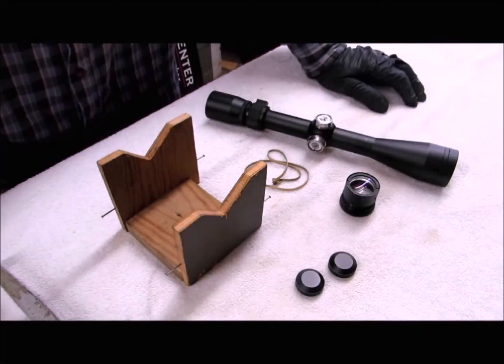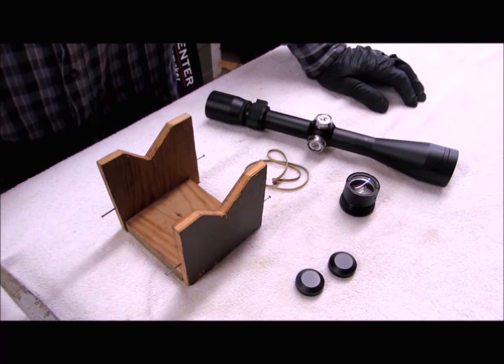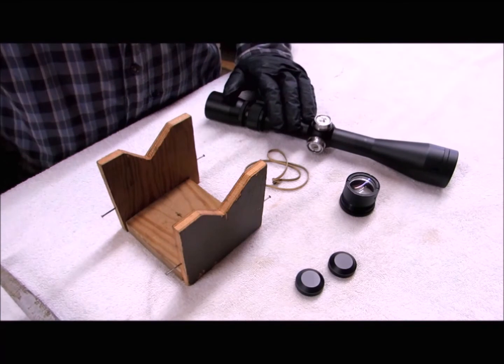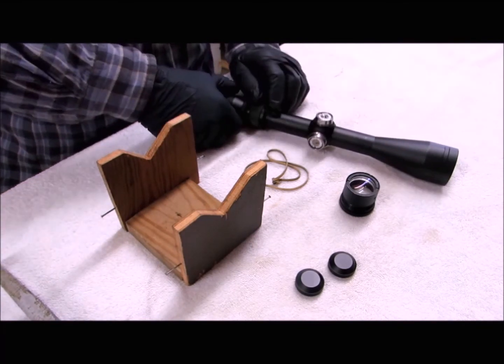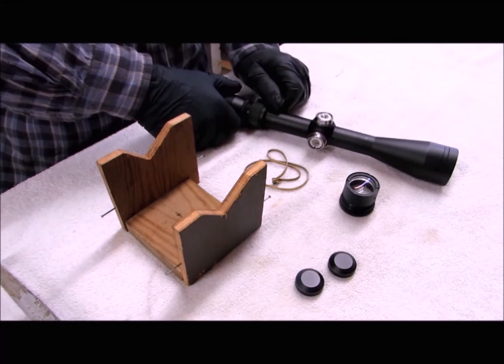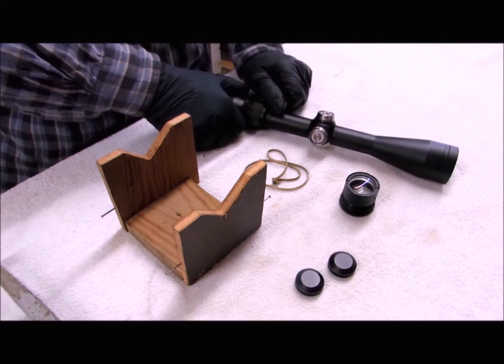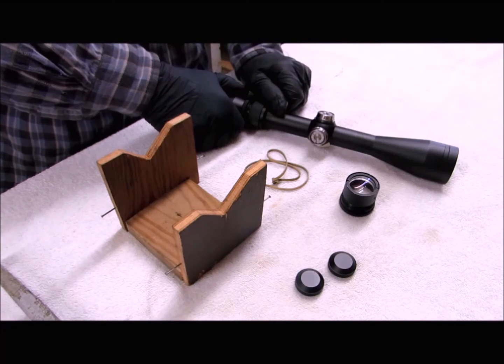Now that I have my reticle repaired, I need to install it in the scope. But in order for a scope to track properly, the reticle has to be aligned with your turrets. The vertical crosshair will be aligned with the elevation turret and the horizontal with the windage turret.